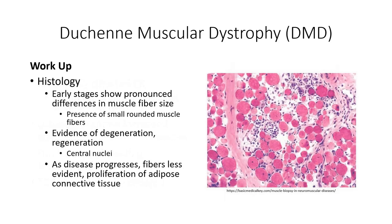Prior to the development of advanced genetic testing, muscle biopsy served as the gold standard for differential diagnosis. Samples are typically taken from the vastus lateralis due to the ease of access. There are few necrotic cells early on in the disease process. At this stage, the most notable findings are a large variability in muscle fiber size, with small rounded or triangular shaped muscle fibers interspersed between much larger fibers. There are also focal regions of regeneration as distinguished through the appearance of centralized nuclei.